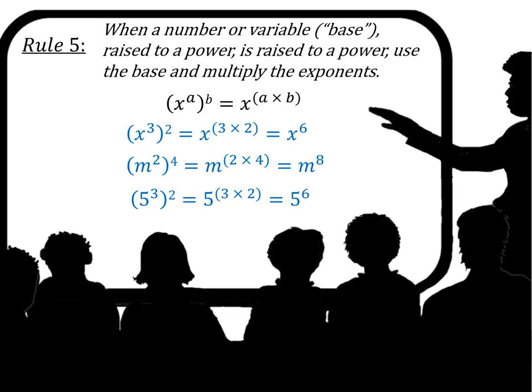So x to the third raised to the second power is x to the 3 times 2, which is x to the sixth. m to the second power raised to the fourth power equals m to the 2 times 4, which is m to the eighth. And 5 to the third power raised to the second power equals 5 to the 3 times 2, which is 5 to the sixth.